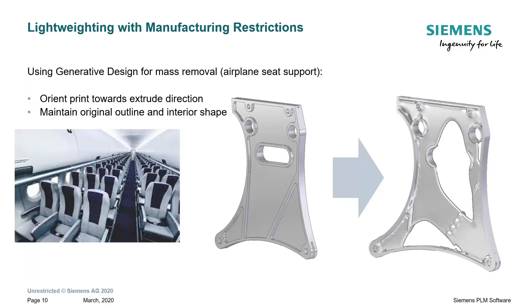We can also do lightweighting with manufacturing restrictions. This means we design and orient the direction of the actual print process itself. We can also protect certain areas that we may machine later on, so this can be a combination of both additive and subtractive manufacturing processes coming together to produce an acceptable part.